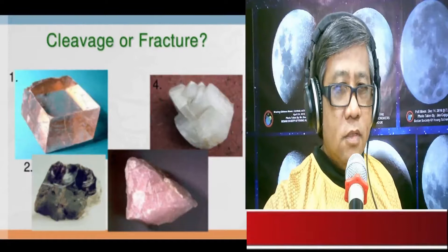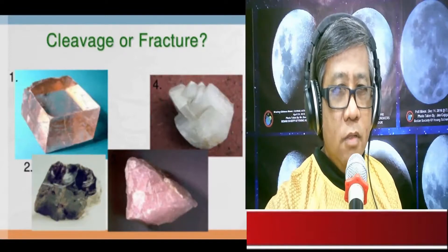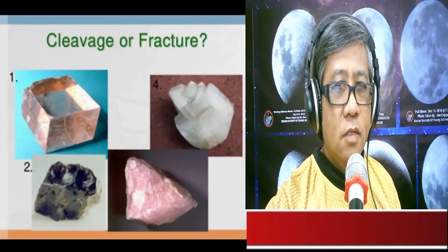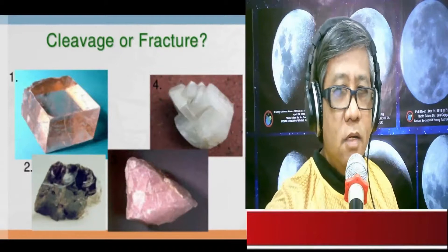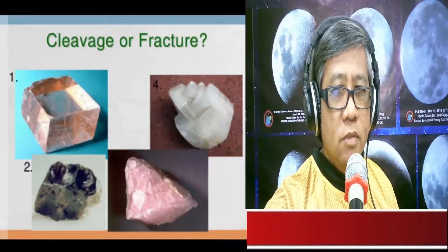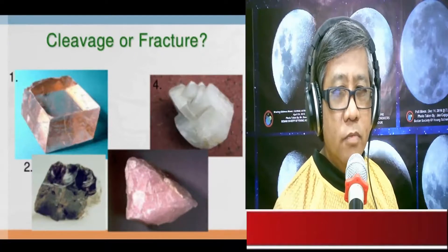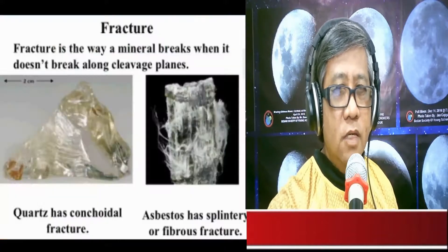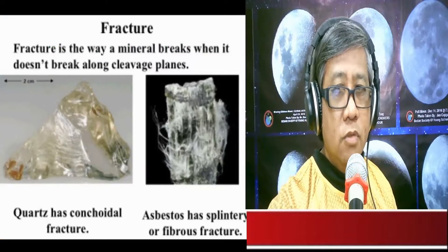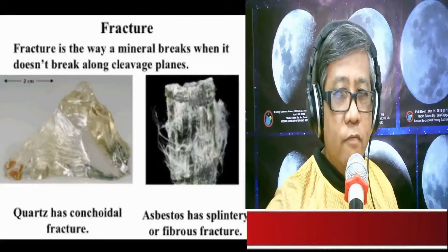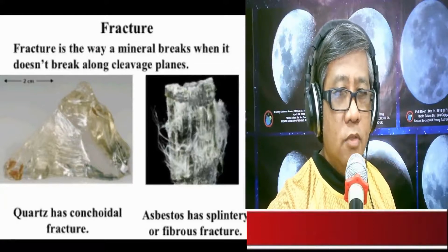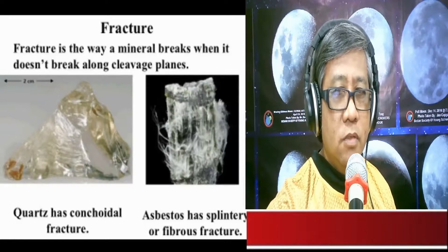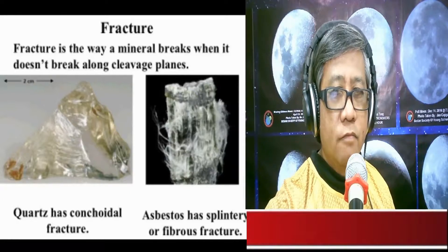Mineral number one exhibits cleavage — when a mineral breaks with smooth surfaces, that mineral has cleavage. Mineral number two exhibits fracture — when a mineral splits with rough and jagged surfaces. For example, quartz has what we call a conchoidal fracture, and asbestos exhibits a splintery or fibrous fracture.